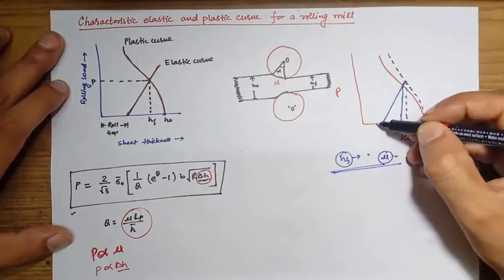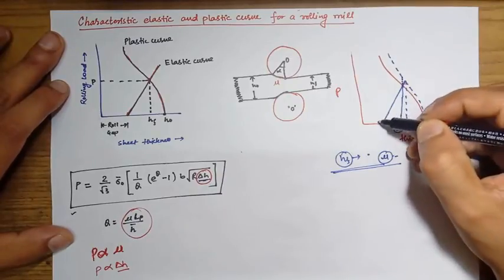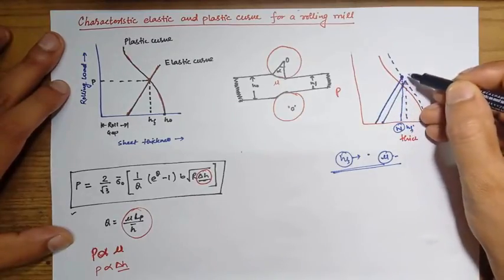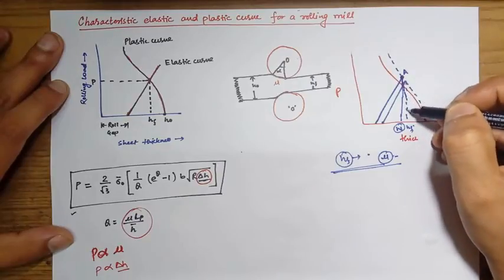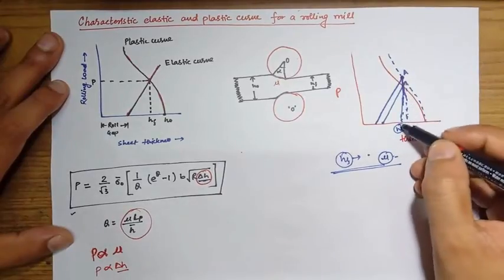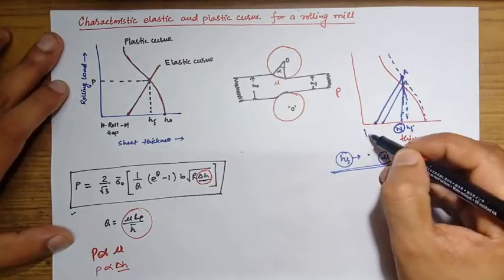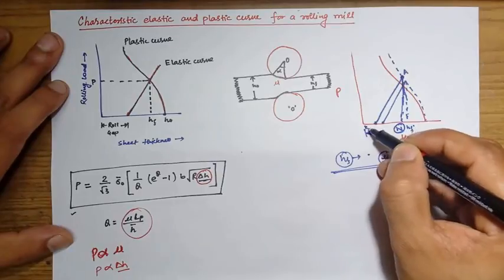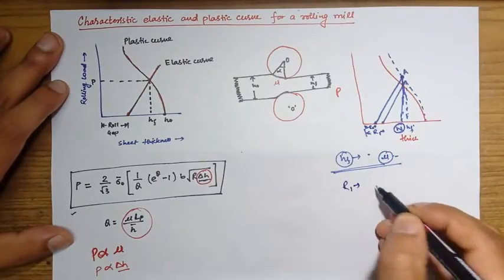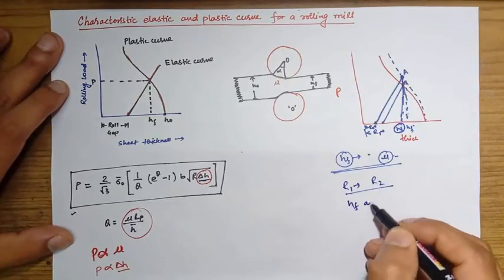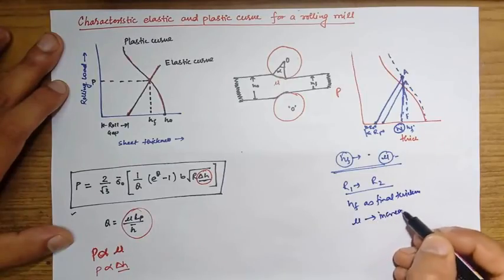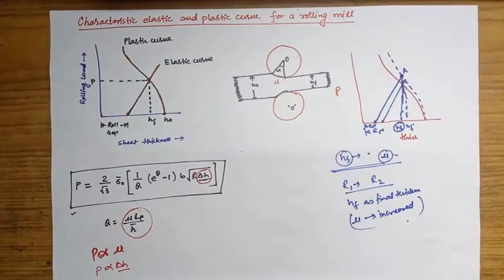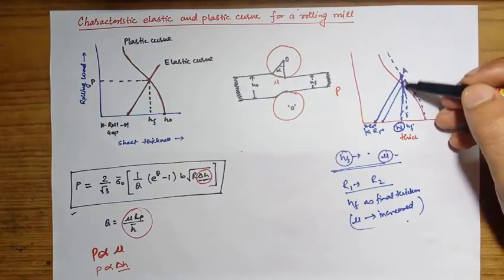If we decrease the roll gap, this will meet at point A. Drawing a vertical line from point A corresponds to HF only. So initially the roll gap was R1, and the second time it is R2. Going from R1 to R2, we will still get HF as the final thickness even though mu has been increased. So if the coefficient of friction increases, we will have to reduce the roll gap to get the same final thickness.